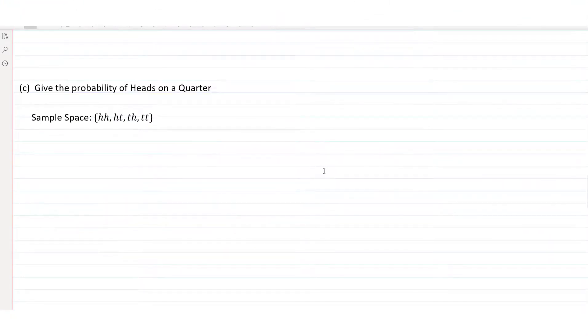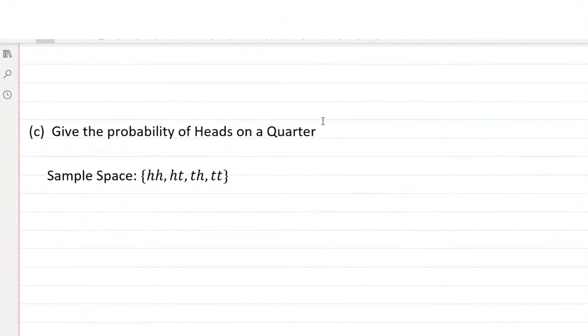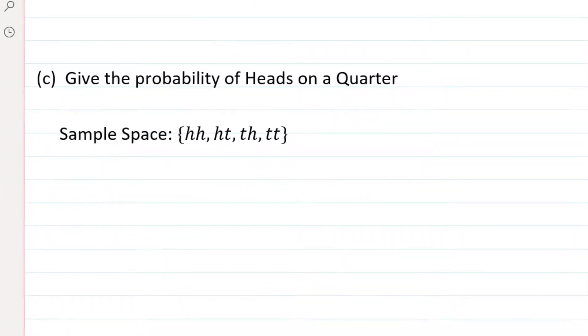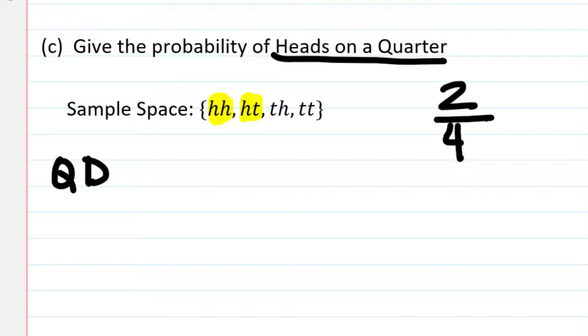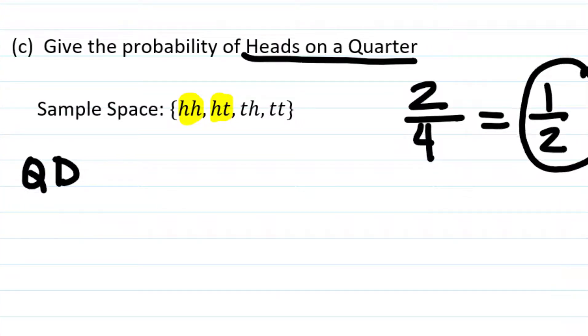Now let's look at Part C. It says give the probability of heads on a quarter. This time, let's do it completely without the diagram. So we're just going to use the sample space. Remember, it's always quarter first and then dime. So when we're looking for heads on a quarter, we're looking for the first letter in the pair to be an H. Heads on the quarter happens here and here. So again, there are two favorable outcomes where we have heads on the quarter out of the four possible. Two-fourths reduces to one-half, so the probability of getting heads on a quarter is one-half.